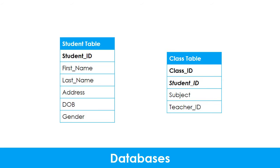Keeping all of the data in one table can lead to duplication of information. To get around this problem, we split the data up into different tables. These are known as relational databases because they contain multiple tables that have relationships linking them together. In this example, there are two tables — one to store student details and one to store class details. They are linked together using a foreign key, which is a field from another table used to link the tables together. In this case, the student ID field is the foreign key in the class table.